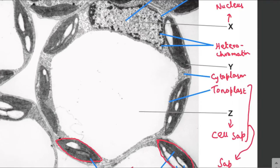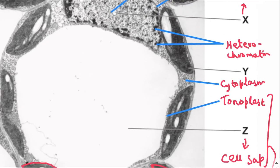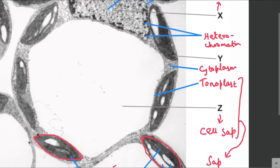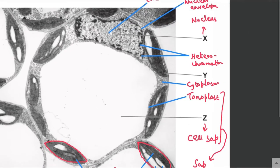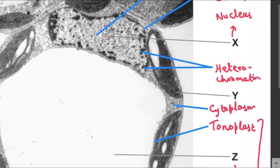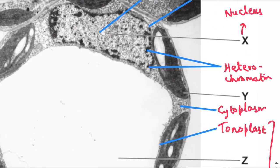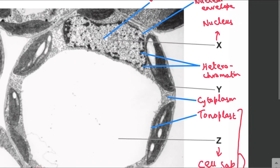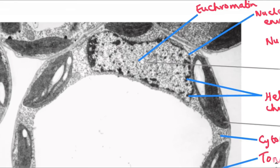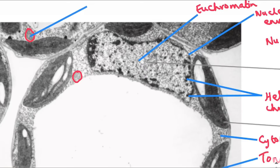We can also see the mitochondria, but in this image mitochondria are rarely visible. For example, this is a mitochondrion and this is another mitochondrion — so we can also identify the mitochondria in this image.